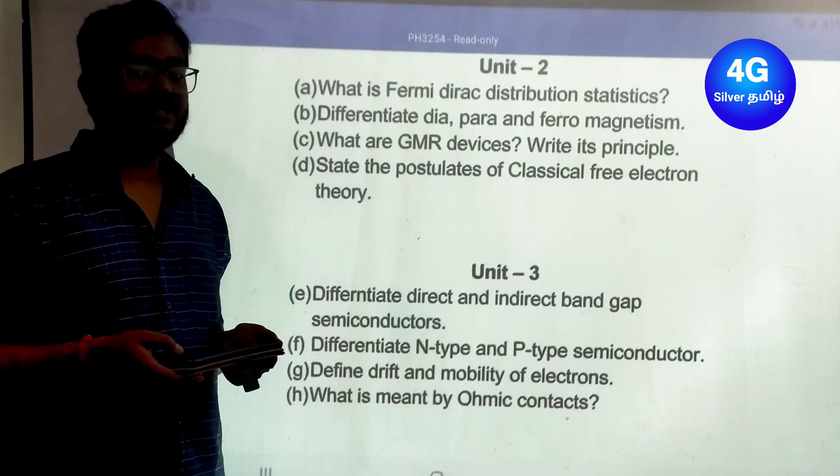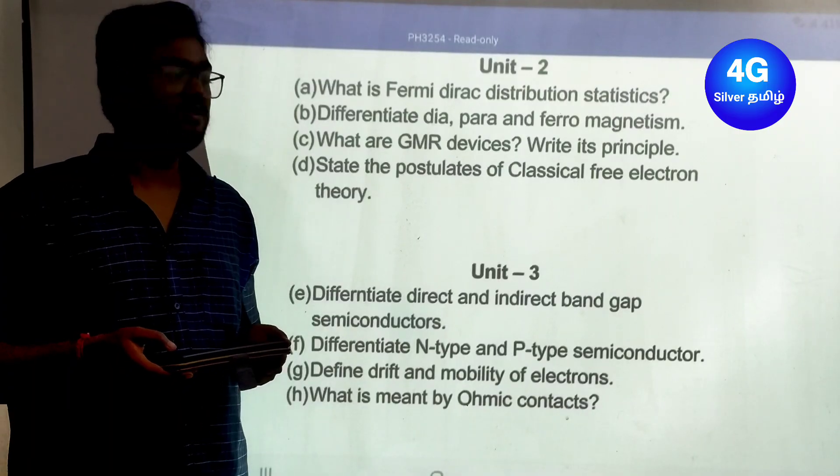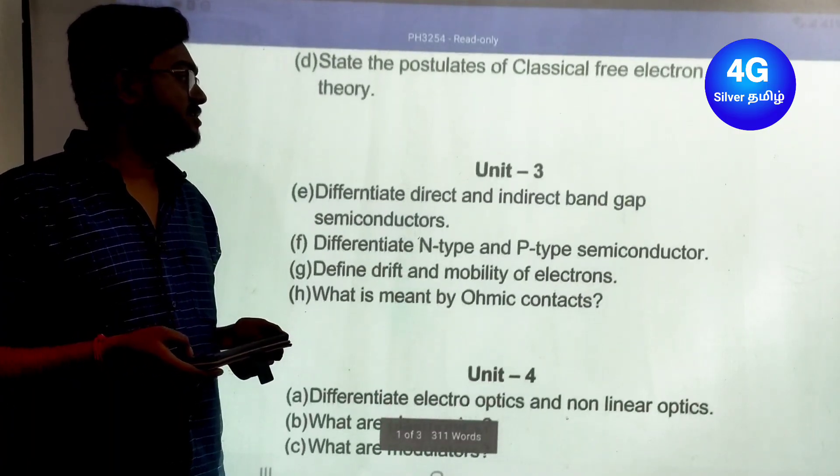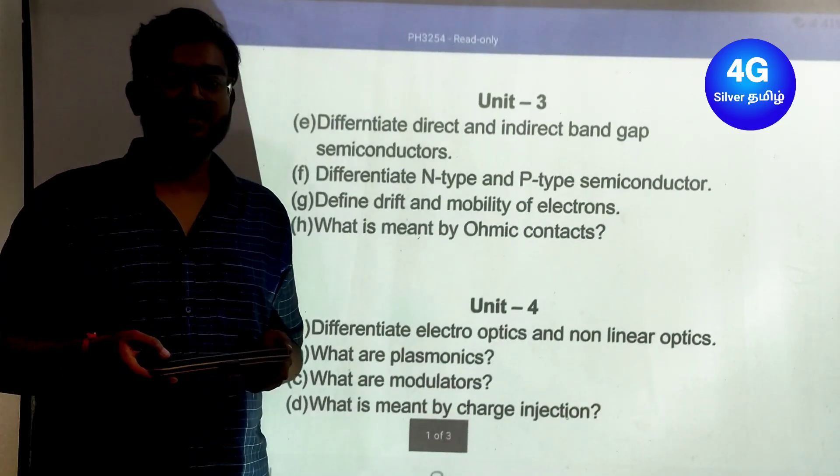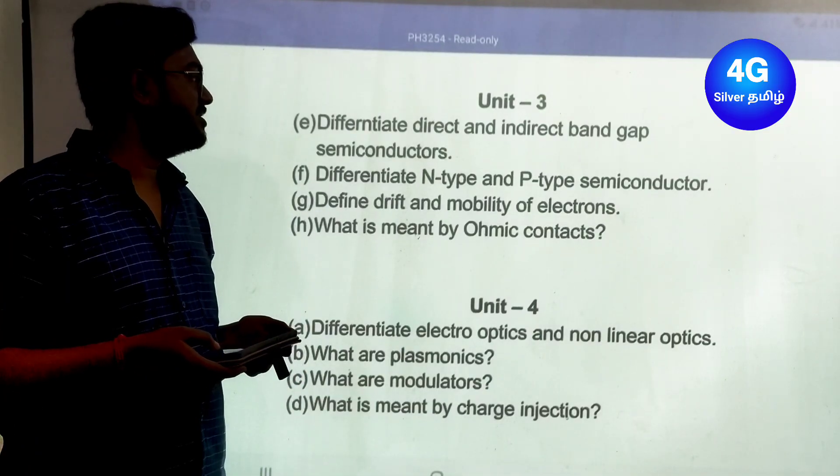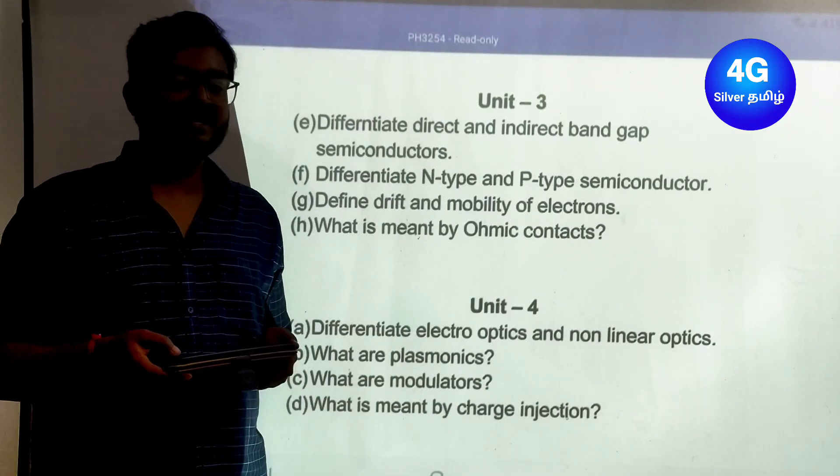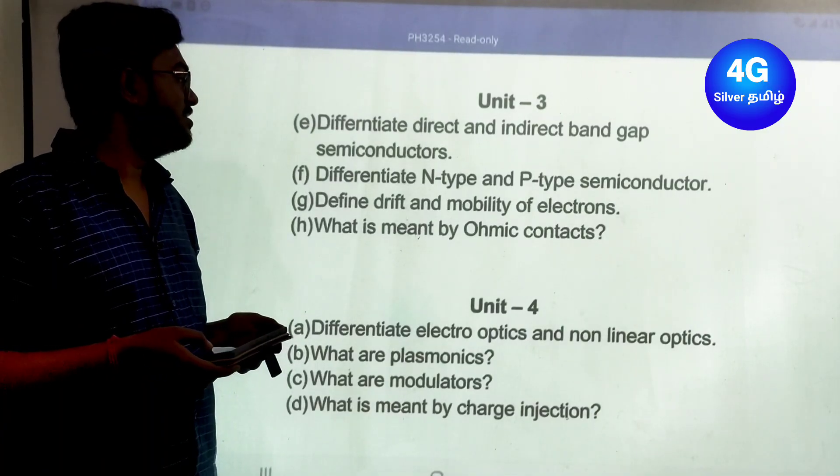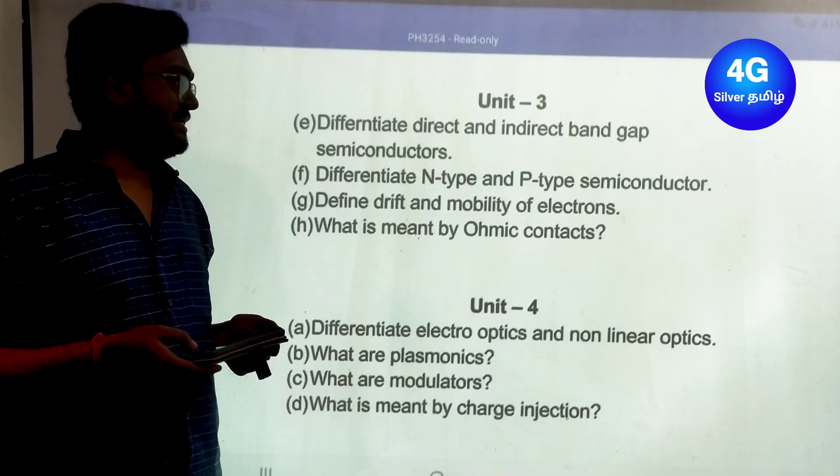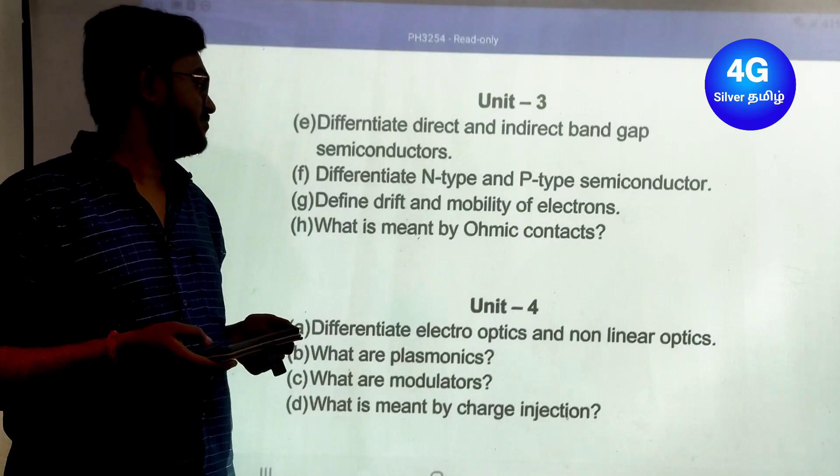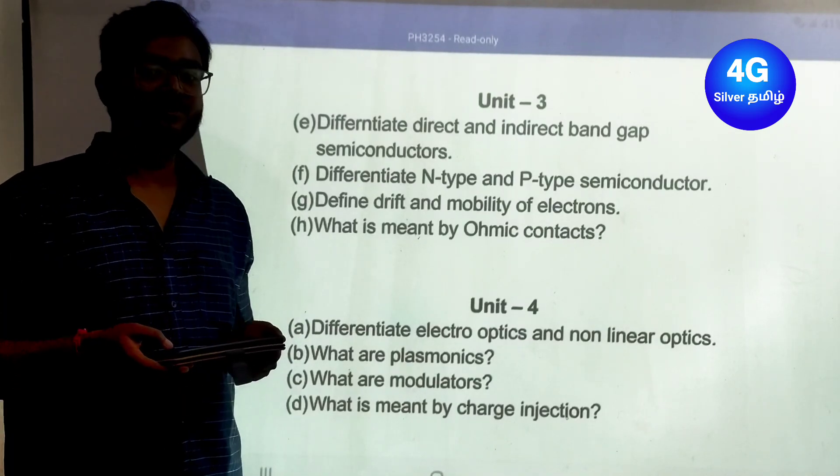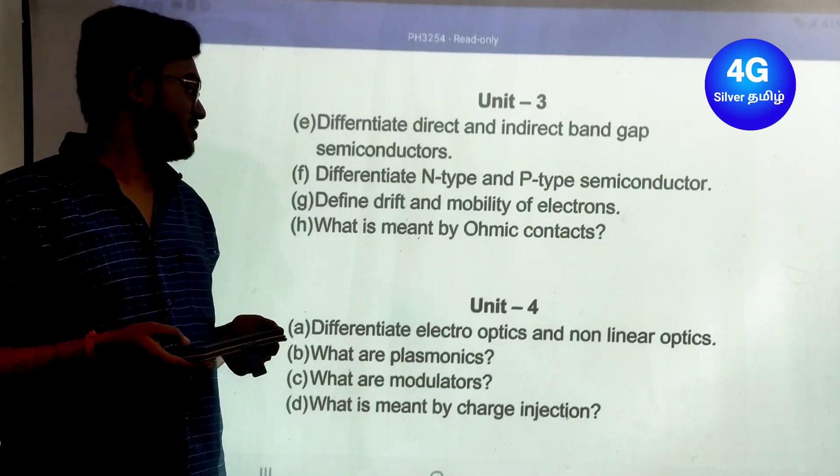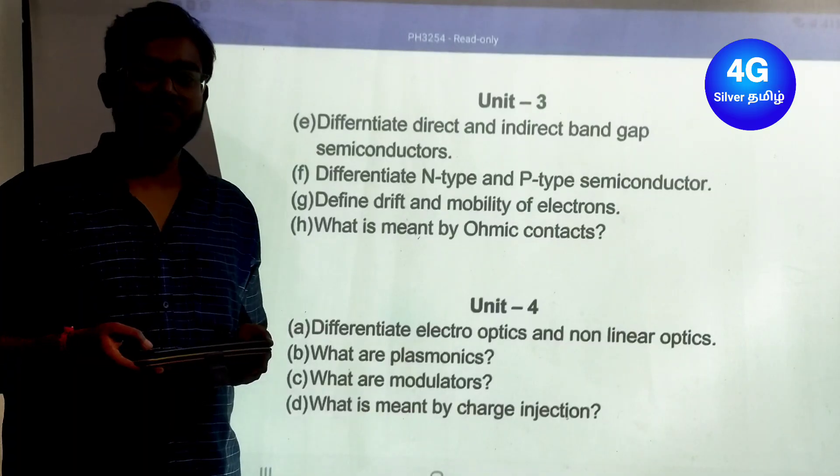State the postulates of classical free electron theory. Next, Unit 3 important two-mark questions: Differentiate direct and indirect band gap semiconductors, differentiate N-type and P-type semiconductor, define drift and mobility of electrons, and what is meant by ohmic contact.